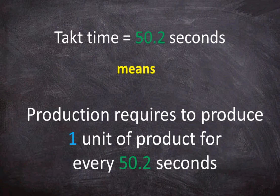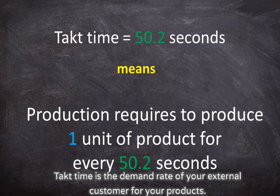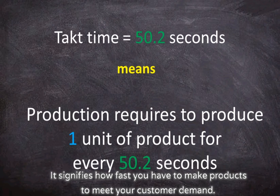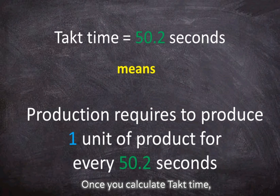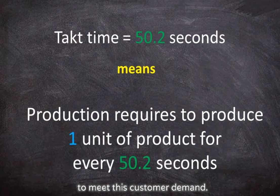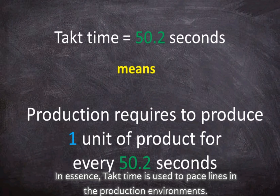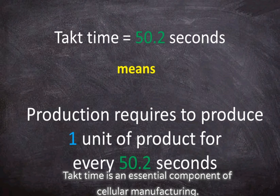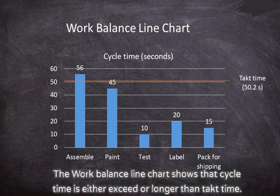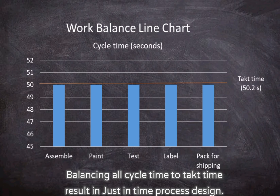A tack time of 50.2 seconds means production requires producing one unit of product every 50.2 seconds. Tack time is the demand rate of your external customer for your products — it signifies how fast you have to make products to meet customer demand. Once you calculate tack time, you can effectively set your value-added processes to meet this customer demand. Tack time is used to pace lines in production environments and is an essential component of cellular manufacturing. The work balance line chart shows that cycle time either exceeds or is longer than tack time, and balancing all cycle time to tack time results in just-in-time process design.